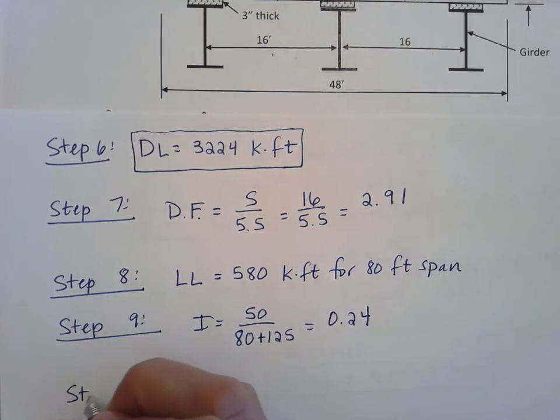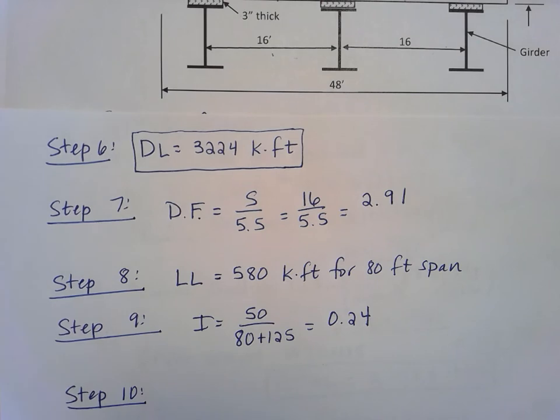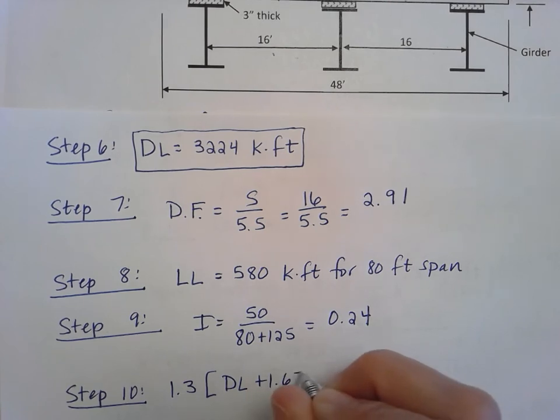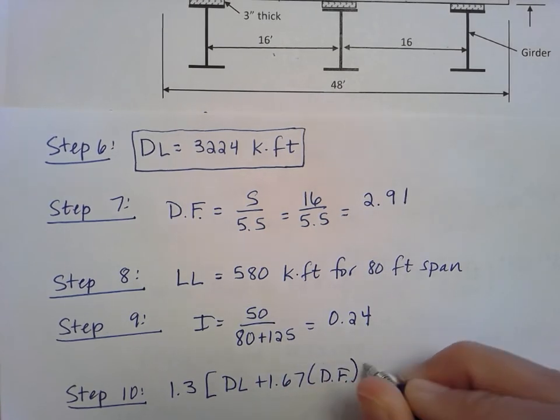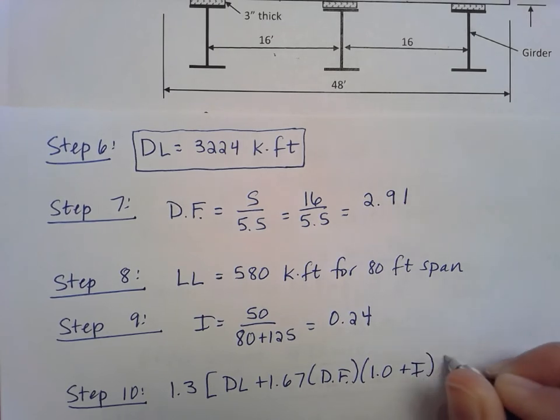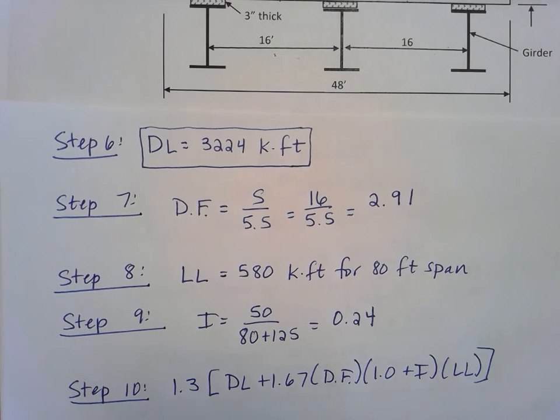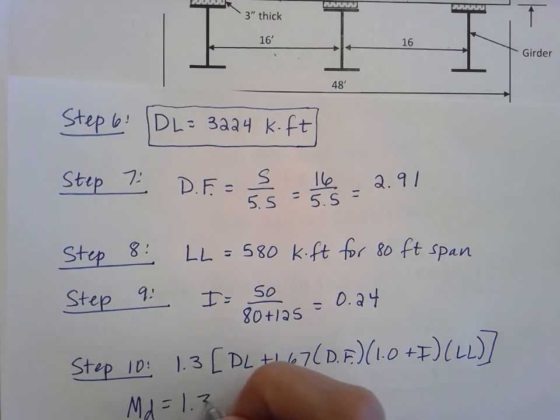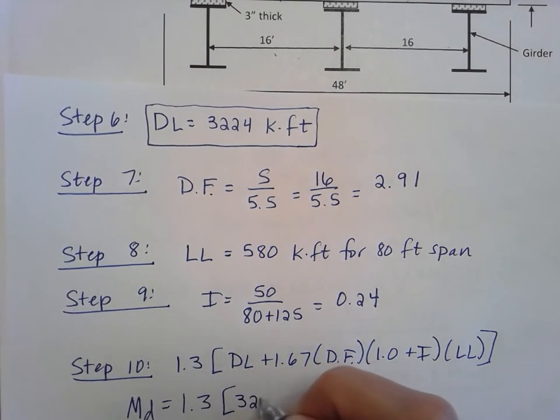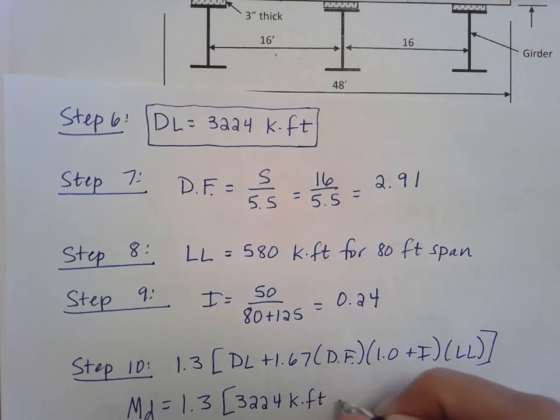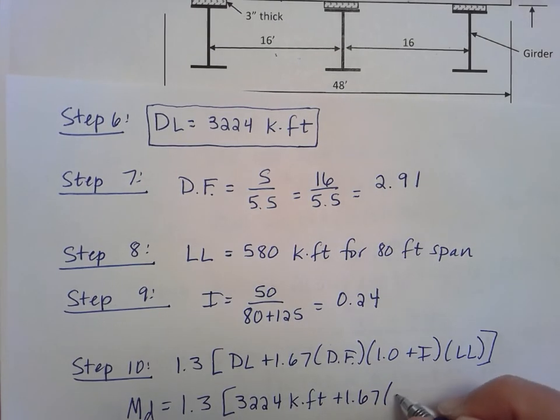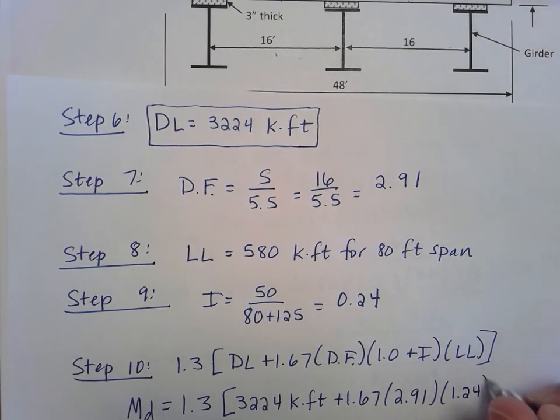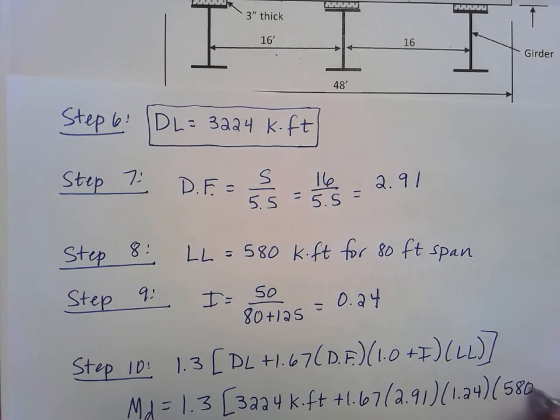Let's write that down for step 10. The formula that we're going to use is 1.3 times dead load plus 1.67 times that distribution factor times one plus the impact factor times the live load. Plugging in all the values that I found, I wind up with factored design moment 1.3 times this 3224 kip foot plus 1.67 times the 2.91 times one plus the 0.24, which is 1.24 times 580 kip feet.